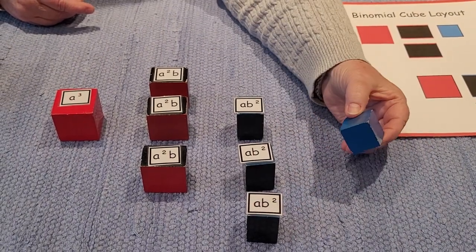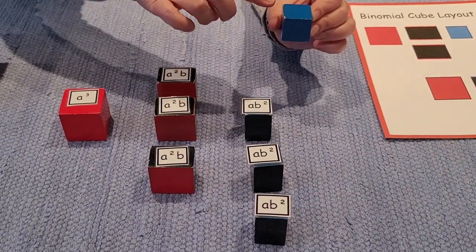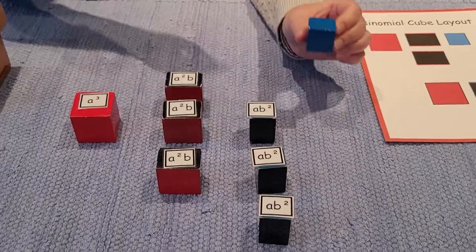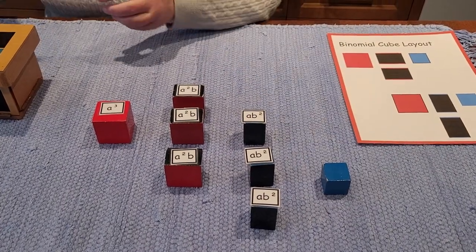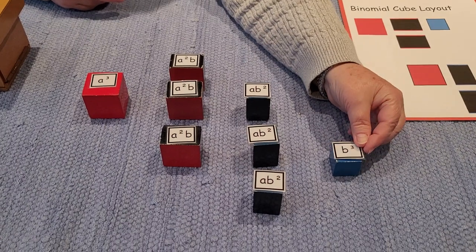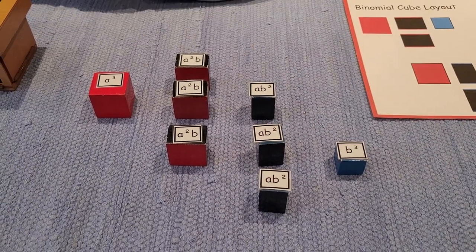And of course, this one is the cube. The length, the width, and the height are all the same, but it's a second dimension, so we call it B. We call it B cubed.